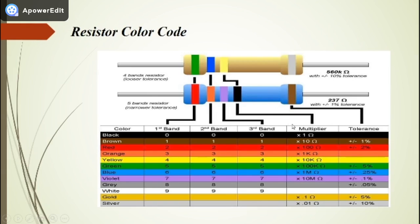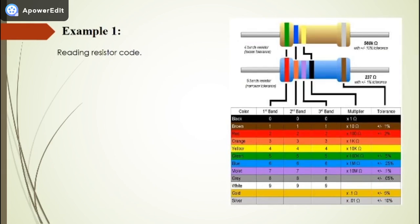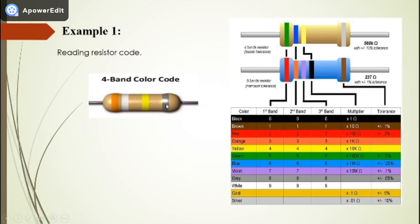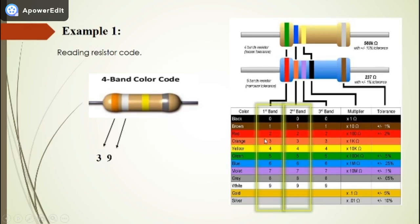We will now see two examples. The first example is reading a four-band color code resistor. As you can see, one color is far from the others — that indicates the tolerance band. Reading from the left, the first band is orange, and from the table the first band column shows orange equals 3, so we write 3. The second band is white, and white in the second band column is 9, so we write 9.